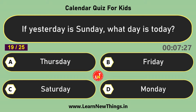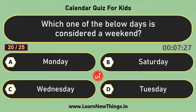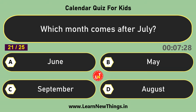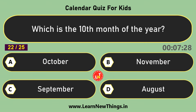If yesterday is Sunday, what day is today? Monday. Which one of the below days is considered a weekend? Saturday. Which month comes after July? August. Which is the tenth month of the year? October.